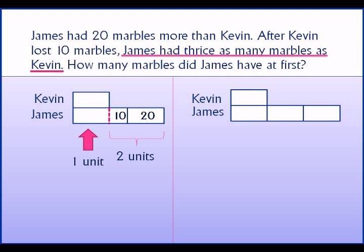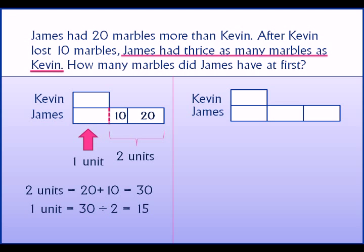So this should be two units, because James has three units and Kevin should have one unit. So two units is equal to 20 plus 10, which is 30. One unit is 30 divided by 2, which is 15. James has three units because the number of marbles James had did not change, so 3 times 15 is 45.